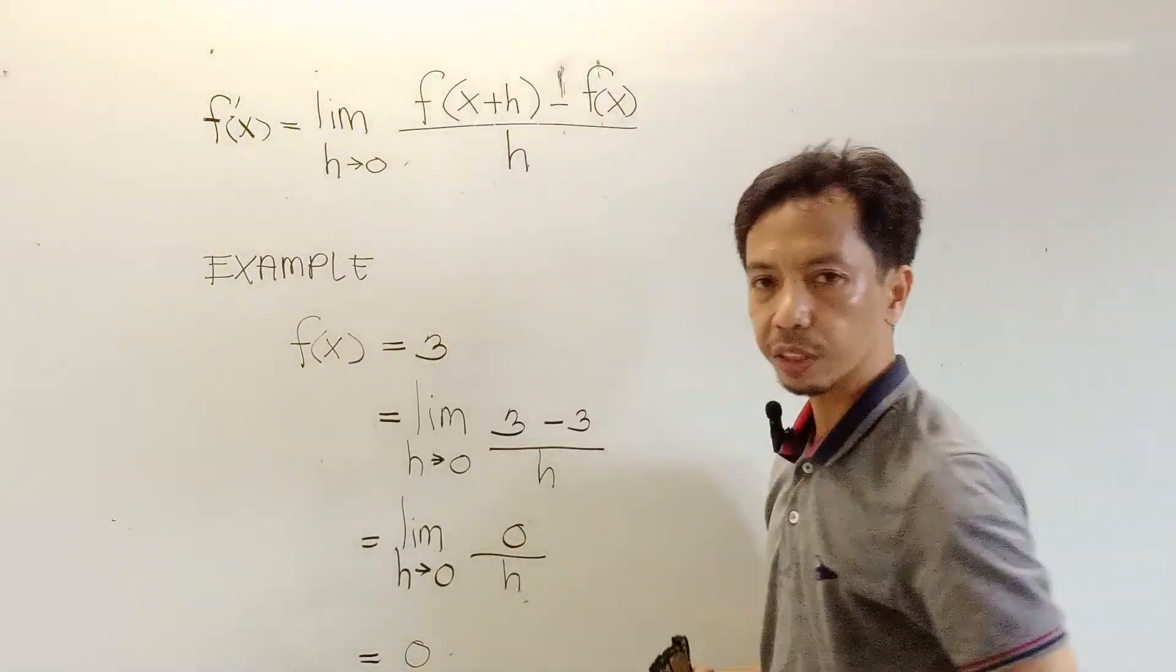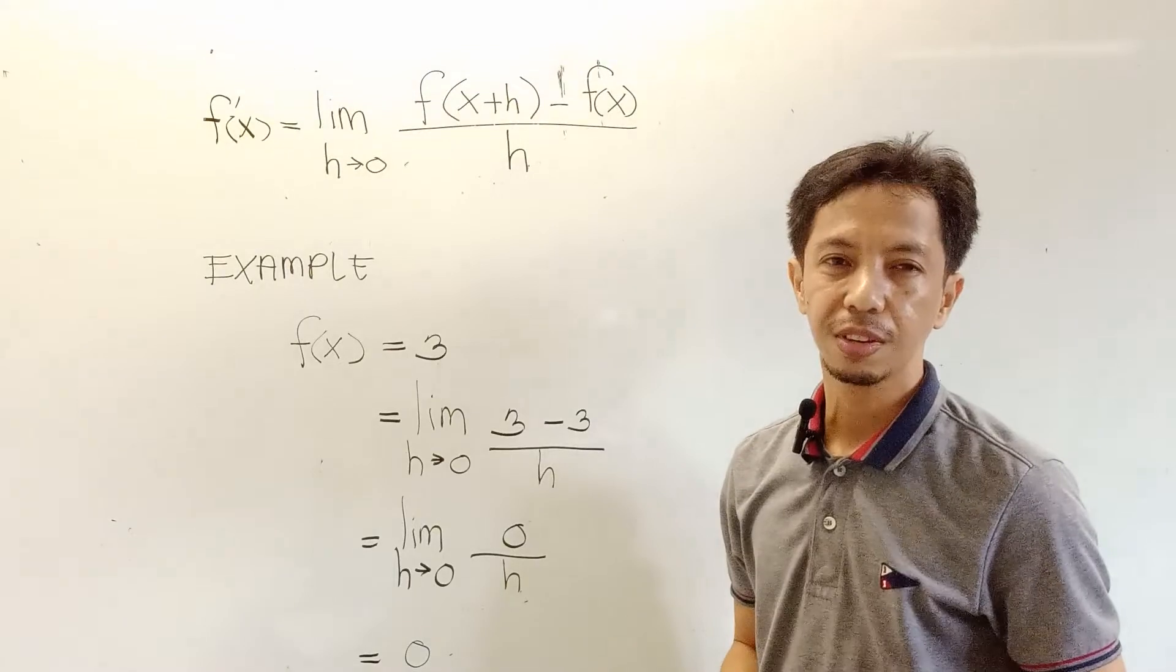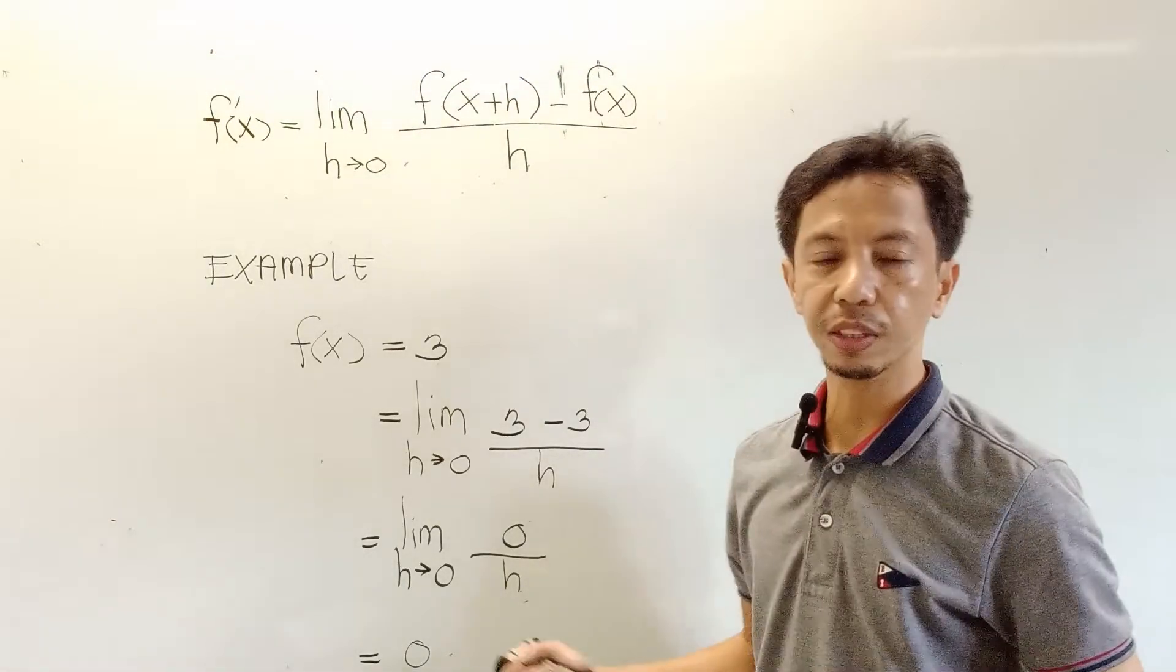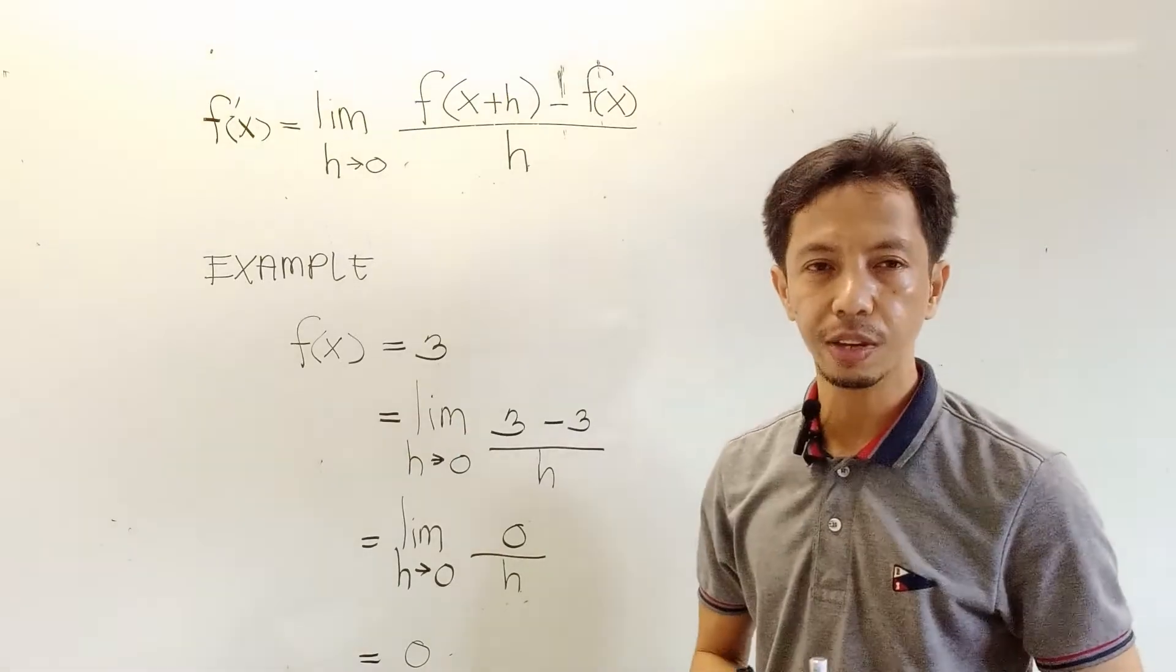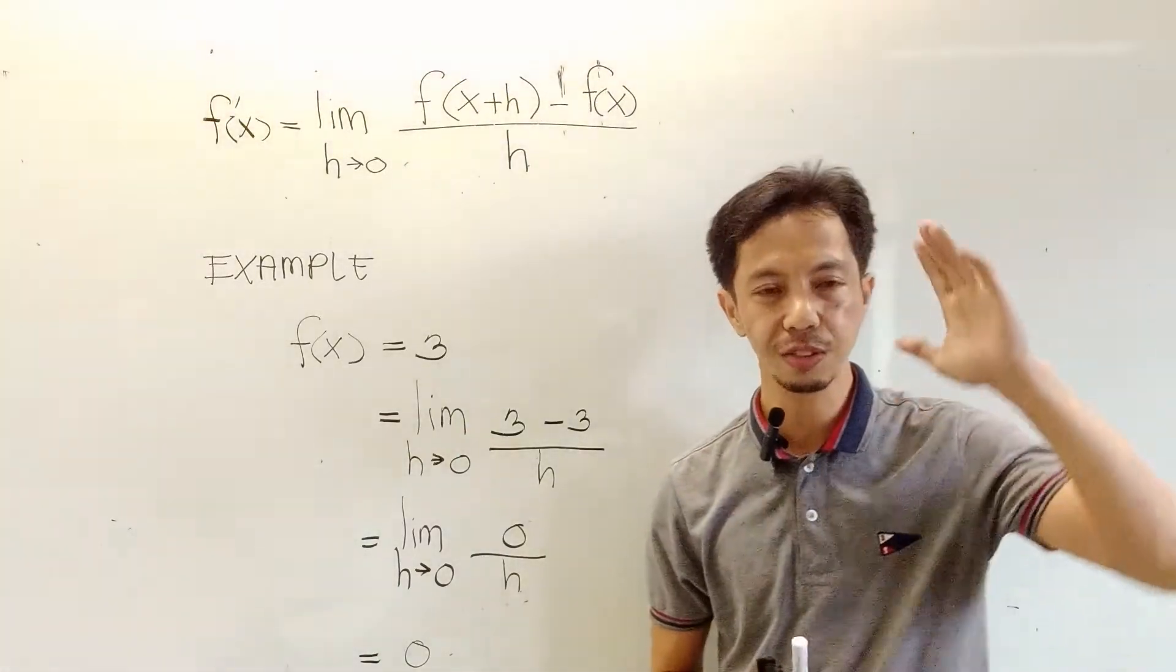So the derivative of a constant is always 0. Alright, thank you for watching and I hope you have learned something. Again, the derivative of a constant is always 0. Thank you for watching, bye bye.